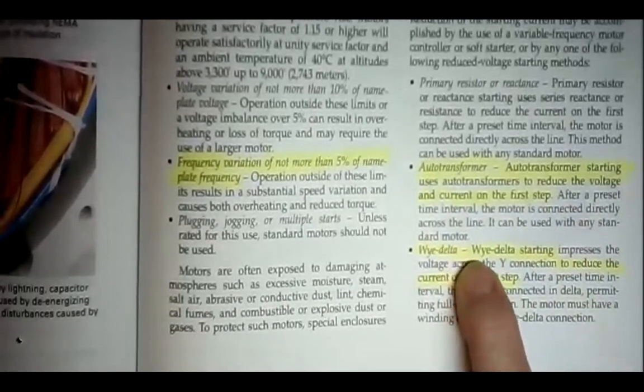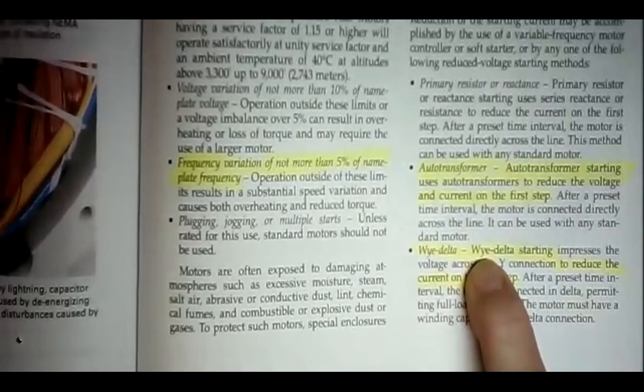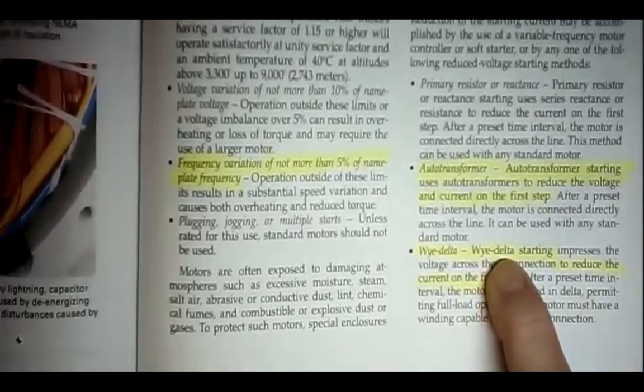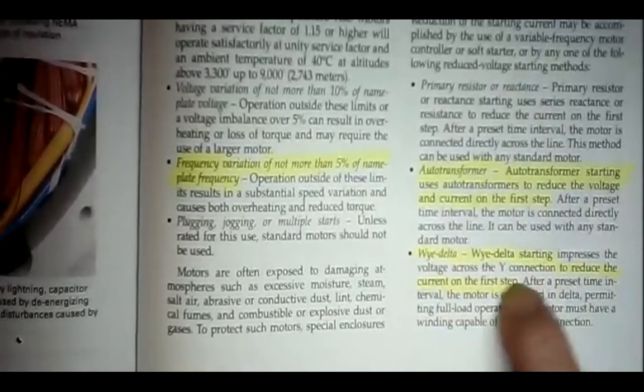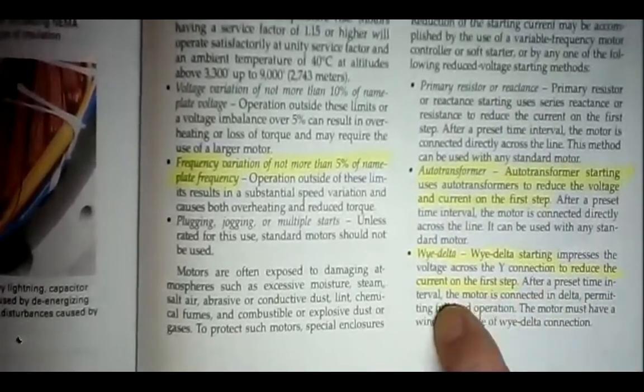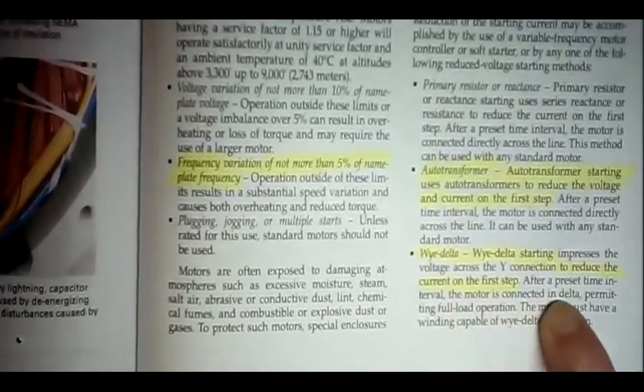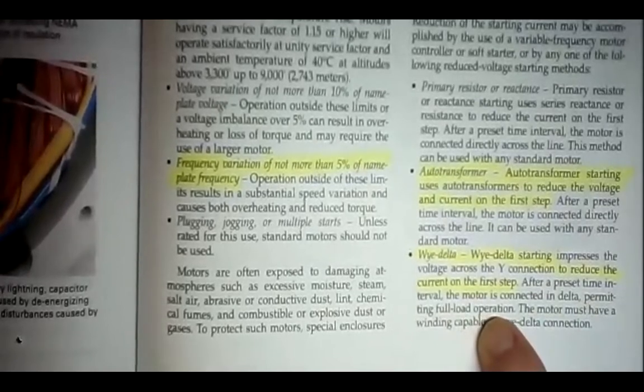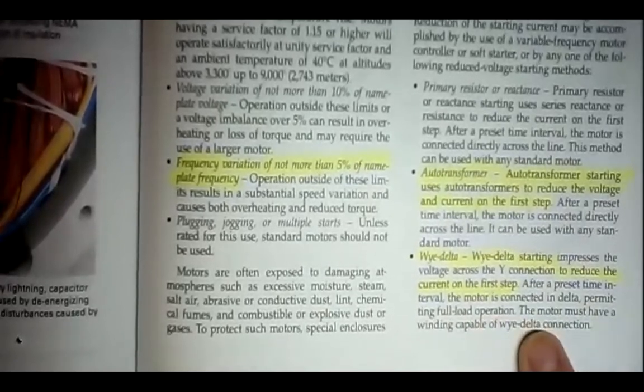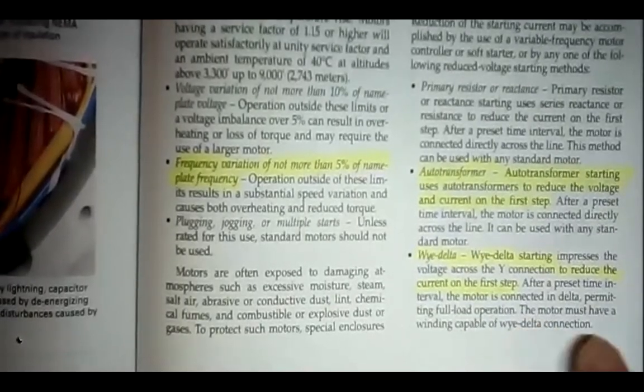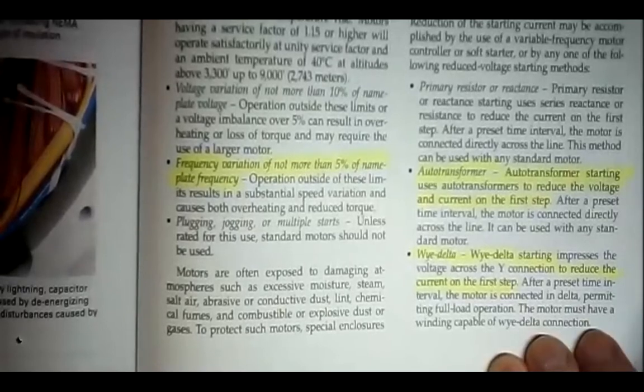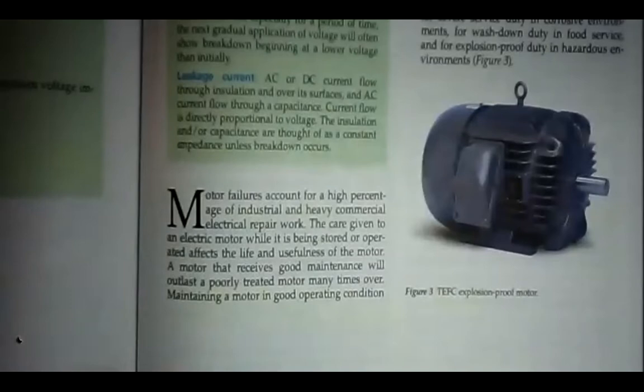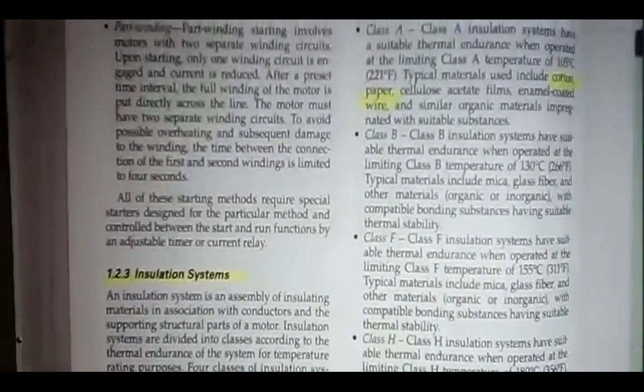Y delta, this is clever. They start the motor in Y. It gets up to about 80% of run speed, and it switches over to delta. Y delta starting. And presses the voltage across the Y connection to reduce the current on the first step after a preset time interval. The motor is connected to delta to permit full load operation. Because if we have 480 volts and we hook it up Y, there's only 277 volts across each coil. When we swap over to delta, now we've got the full 480 volts across the coil. So the motor sees 277, and then it sees 480.